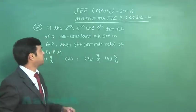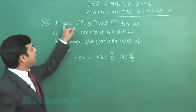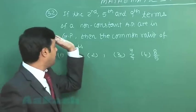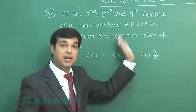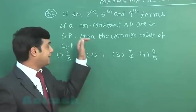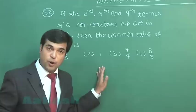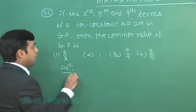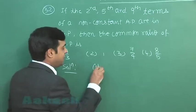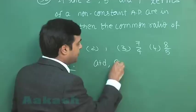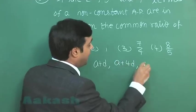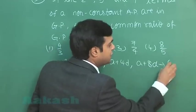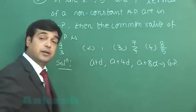Okay, let us move on to the next one, that is question number 32. If the second, fifth, and ninth terms of a non-constant AP are in GP, then the common ratio of GP is? Four options are given. A simple one. We can simply write the second, fifth, and ninth terms are in GP. Three terms are in GP.